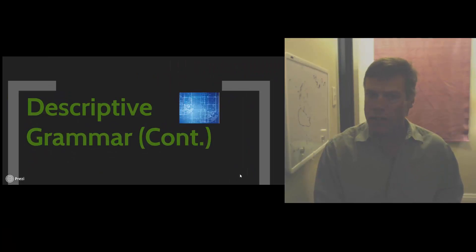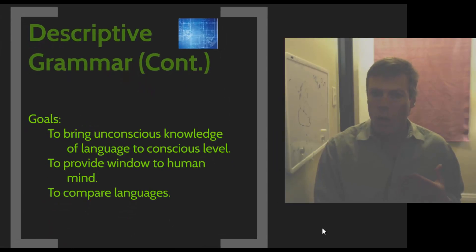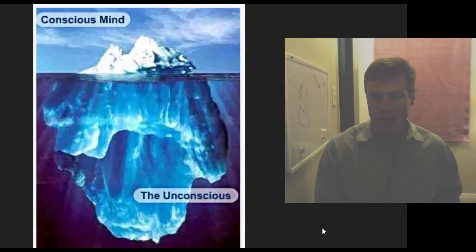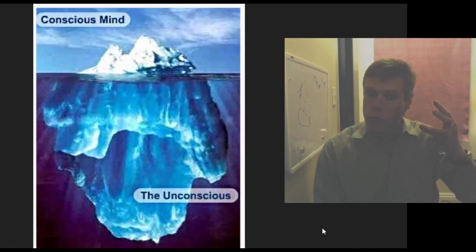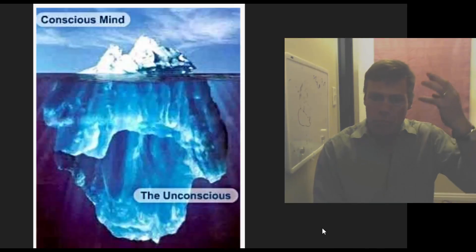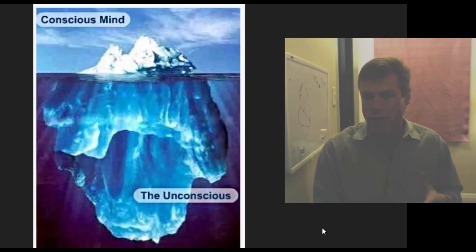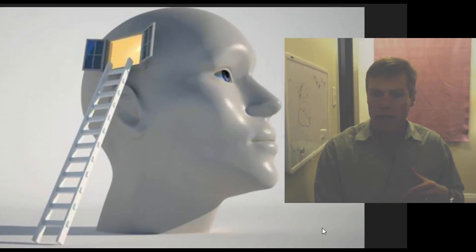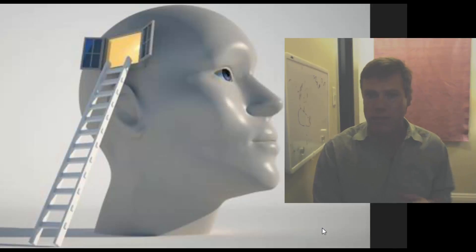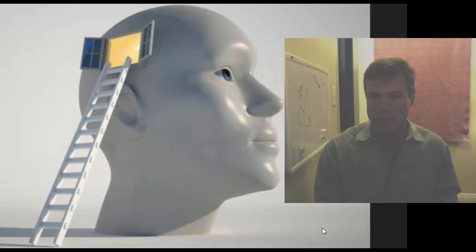Continuing on with descriptive grammar, one of our goals is to bring the unconscious knowledge of language to the conscious level. Our mental grammar is unconscious — we know we've got it because we can use language, but it's unconscious, and we want to bring that to the conscious level. That's why we're describing it: to better understand what's happening at that deeper level. Another thing we're trying to do is provide a window to the human mind, so we can see what's happening in the human mind. And swearing tells us an awful lot about what it means to be human.